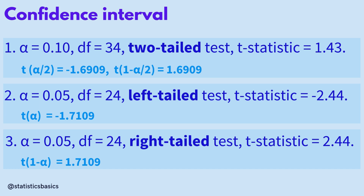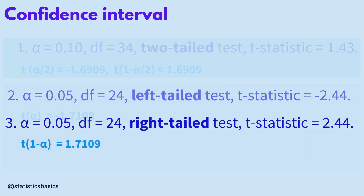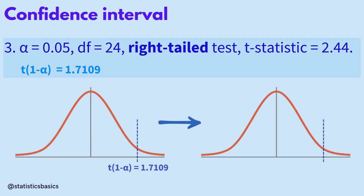Similar to the second case, a one-sided 95% confidence bound will be constructed for the right-tailed test. The upper limit is calculated by adding the margin of error to the point estimate, and the lower limit extends towards negative infinity.